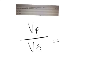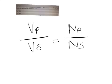First things first, we need to be able to use our formula. Our formula states that the voltage in the primary coil divided by the voltage in the secondary coil is equal to the number of turns in the primary coil divided by the number of turns in the secondary coil.